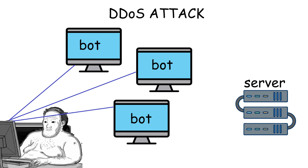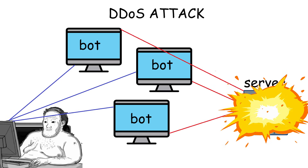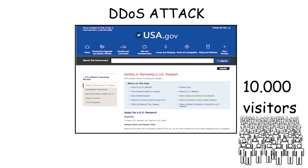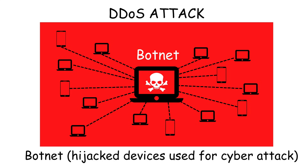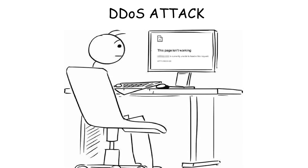DDoS attack. A DDoS attack is when a hacker floods a website or server with so much fake traffic that it crashes. Imagine a government website that usually gets thousands of visitors a day, but suddenly gets millions out of nowhere — not from real people, but from thousands of botnet devices across the world.